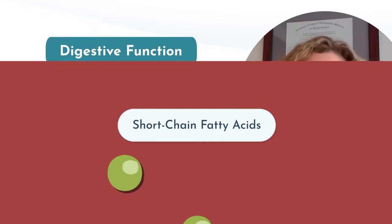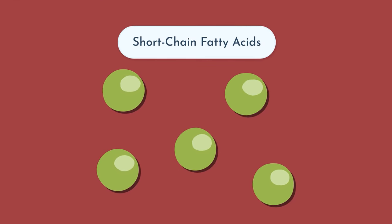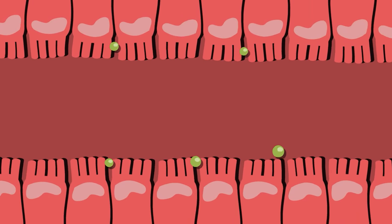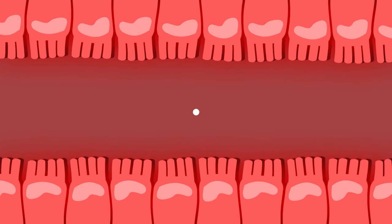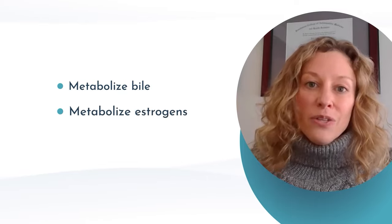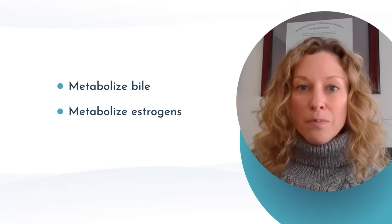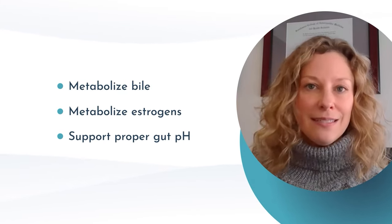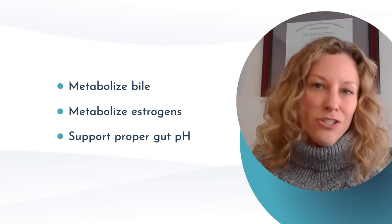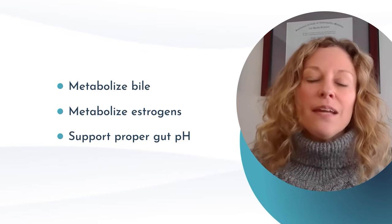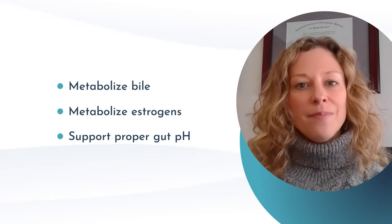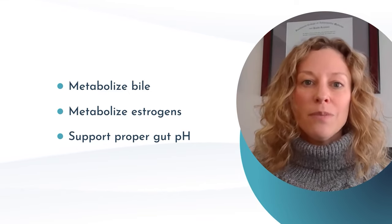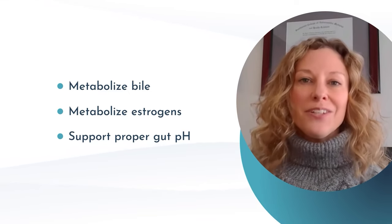Short chain fatty acids feed the cells in the gut lining and help to keep our overall gut environment healthy. Gut bacteria also help to metabolize bile in the intestines. Your liver sends bile to your small intestine to help you digest your fats, and when that's done, bacteria and their enzymes help to break it down so that the bile acids can be resorbed and recycled by your liver.